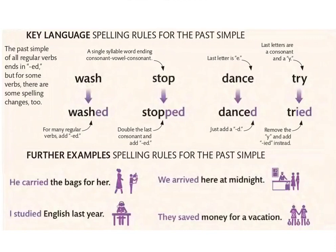Now we will move to regular verbs. There are many regular verbs, and in the past we add -ED. So all regular verbs end in -ED in the past. For example, 'wash' is a regular verb — نزيدوا -ED مباشرة: wash → washed. مثلا: I washed the dishes last night.